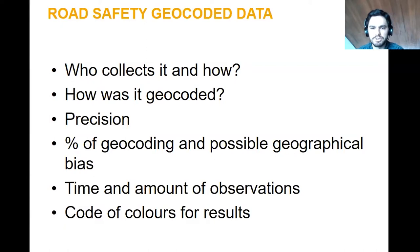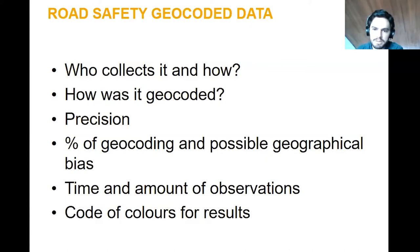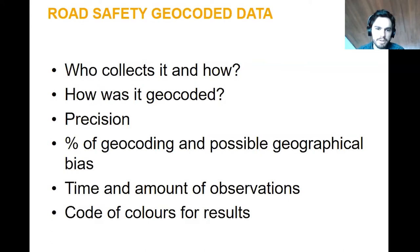The precision of how data is collected is very important for our analysis, because if we don't have high precision we will not be able to make a very precise analysis. It's still possible to do analysis, but it's important to take into account the percentage of geo-correction and possible geographical bias. For example, in Colombia, in low income areas it's often very dangerous, and because of that it's less likely that crash data will be collected in those neighborhoods.